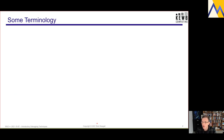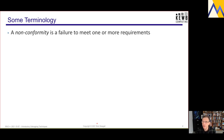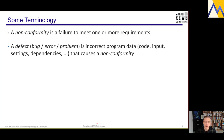I'd like to briefly go over some terminology. A nonconformity is a failure to meet requirements, whether implicit or explicitly stated. A defect — also called bug, error, or problem — is incorrect program data. By program data I mean all the things that go into a program's creation and execution: the code, the input, the settings that configure it, dependencies, et cetera — incorrect program data that causes a nonconformity.